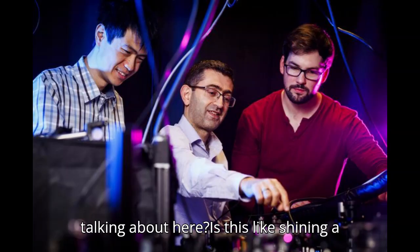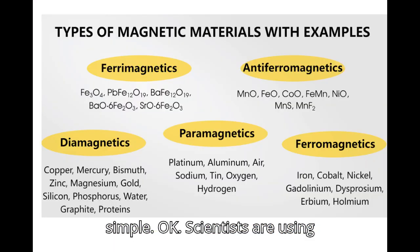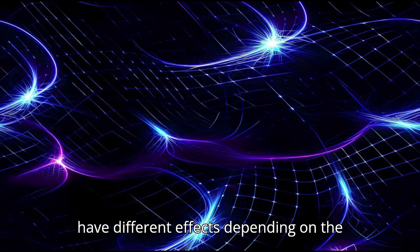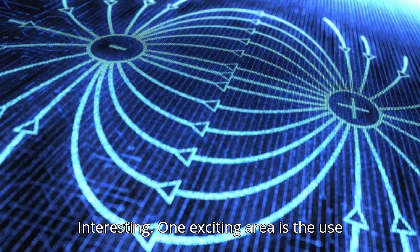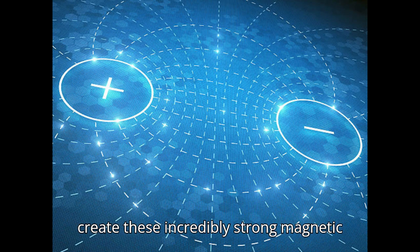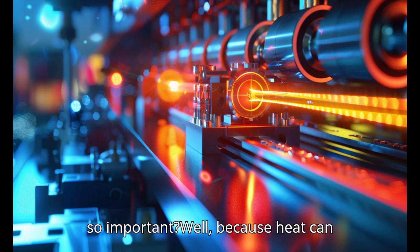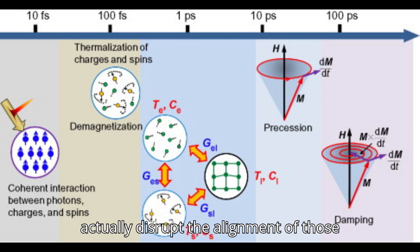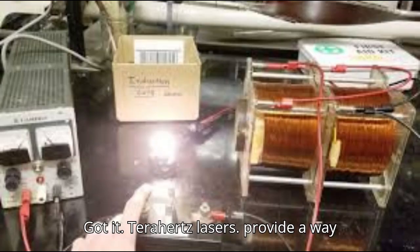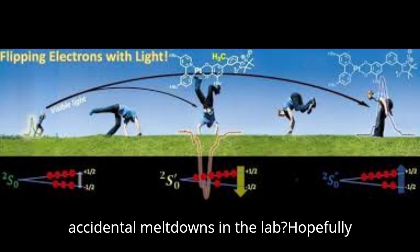What kind of light are we talking about here? Is this like shining a flashlight on something and boom, it's magnetic? Not quite that simple. Scientists are using different types of light, from visible light to terahertz radiation, and they each have different effects depending on the material they're interacting with. One exciting area is the use of terahertz lasers - they're particularly interesting because they can create these incredibly strong magnetic fields without heating up the material they're aimed at. Heat can actually disrupt the alignment of those electron spins, which ruins the magnetic effect. Terahertz lasers provide a way to manipulate magnetism very precisely without that unwanted heat.